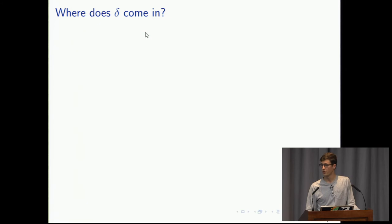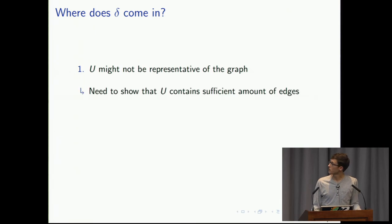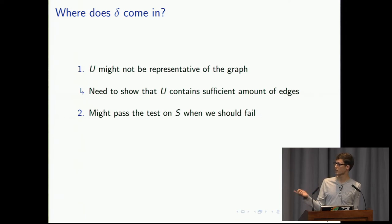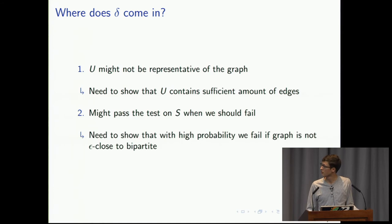Where does delta come from? First, U might not be representative of the graph — it might not contain enough influential vertices or see enough of the graph. So we need to show U contains a sufficient number of edges. Second, we might pass the test on S when we shouldn't — accepting the input because we passed the test on S from an analysis point of view, when the graph is actually not epsilon-close to bipartite, meaning there were too many violating edges in the neighbors of U. We need to make this test hard enough.